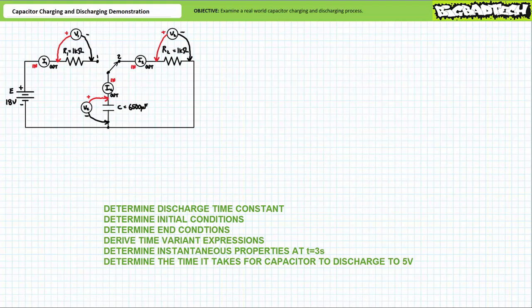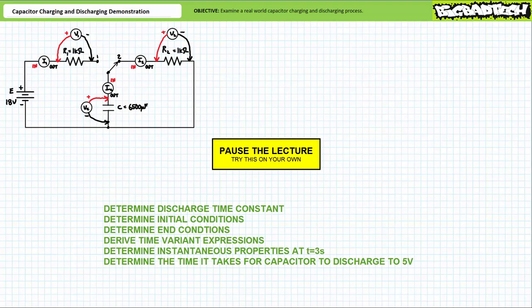To make your job easy, simply assume the discharge starts at another t equals 0 — this method beats including a 32.5-second offset into each equation. Given these time-variant expressions, see if you can determine instantaneous values for all discharge elements at three seconds into the discharge, and also determine the time when the capacitor voltage drops to 5 volts. Before you go off with this task list, note that the orientation of instrumentation in the circuit remains as illustrated. If current flow reverses direction during the discharge process — hint hint — one might anticipate certain properties to experience negative values.